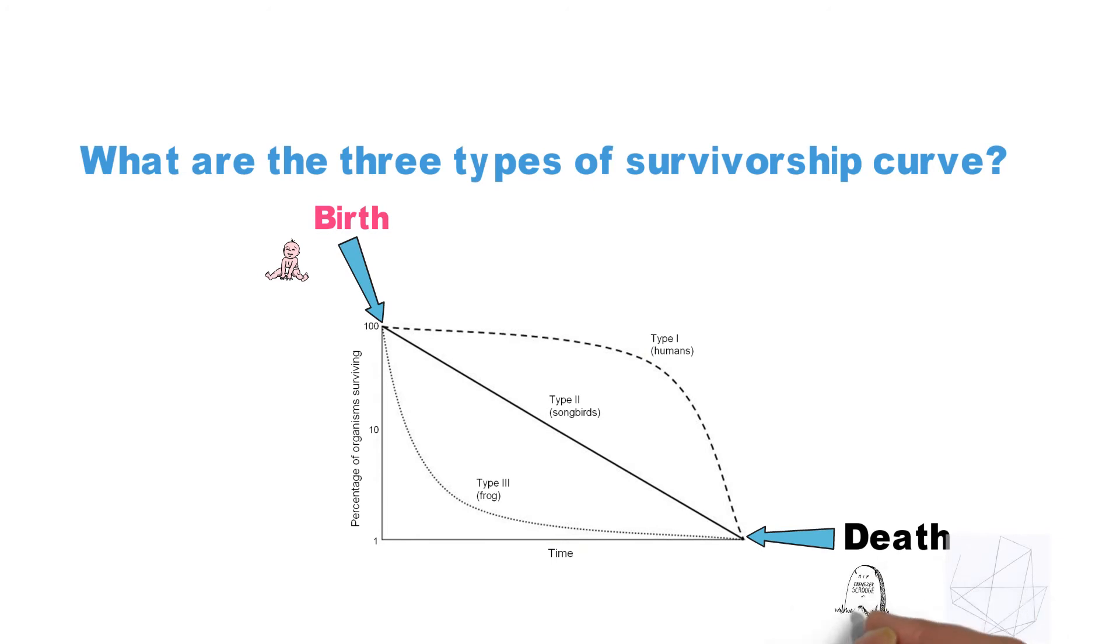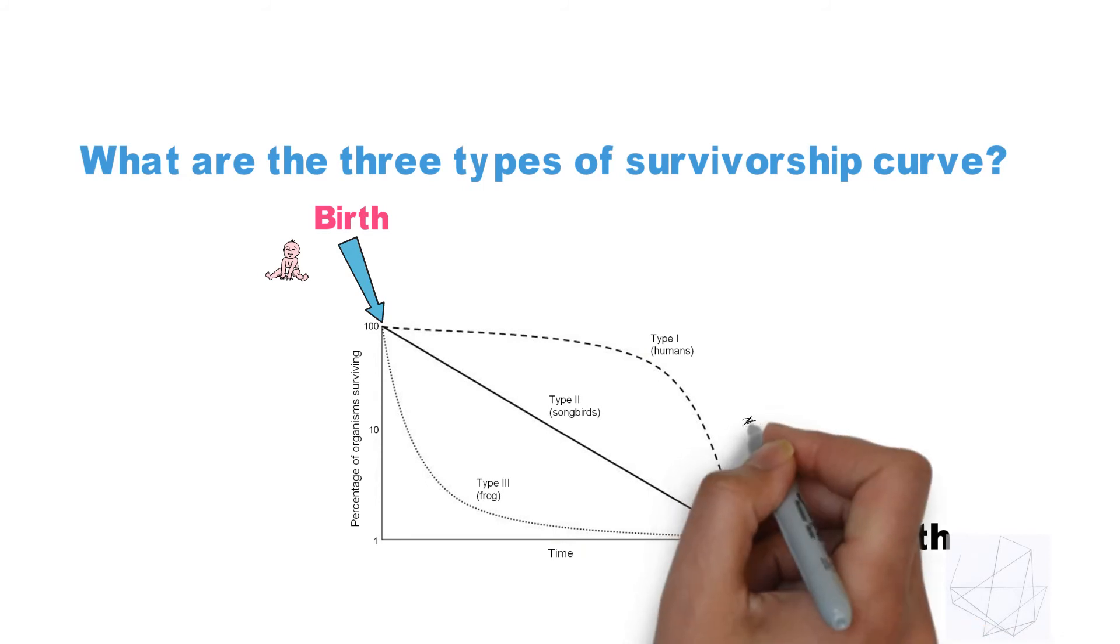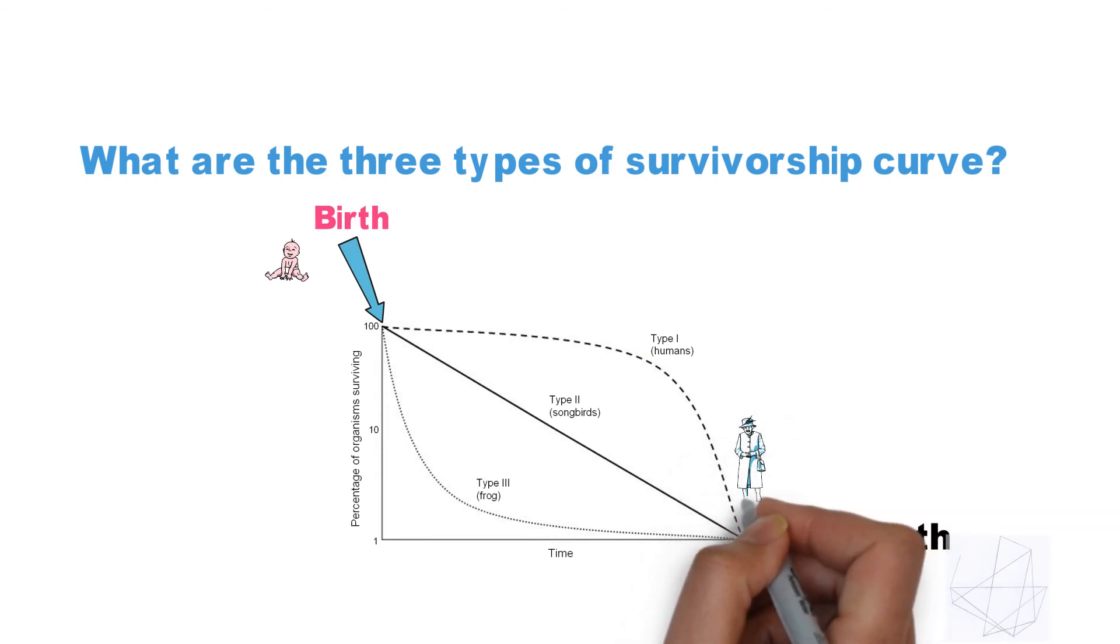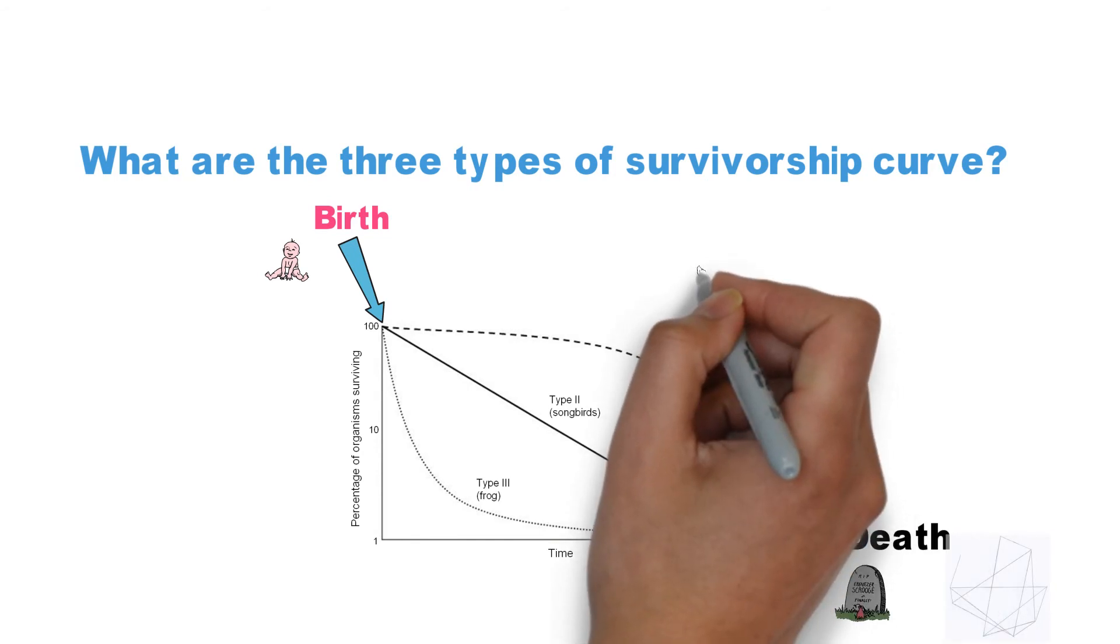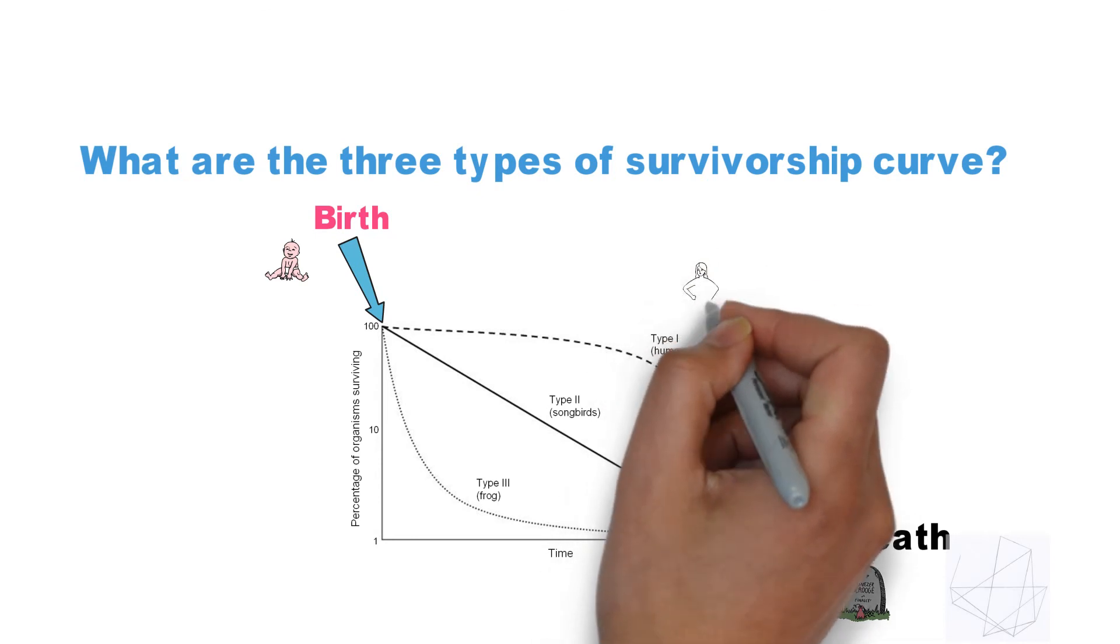Type 3, on the other hand, has a concave curve with the greatest mortality and lowest age-specific survival early in life. Those surviving this bottleneck have relatively low rates of death and high probability of survival. This type of curve is characteristic of species that produce a large number of offspring, like frogs.